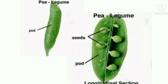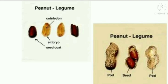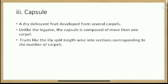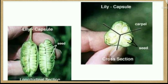Some images of pea and peanut showing longitudinal section and legume. Capsule: a dry dehiscent fruit developed from several carpels. Unlike the legume, the capsule is composed of more than one carpel. Fruits like the lily split lengthwise into sections corresponding to the number of carpels. Image of lily and cotton showing the capsule.